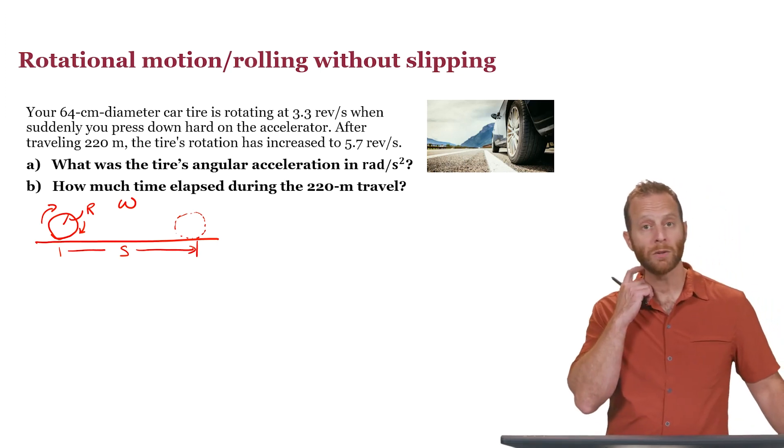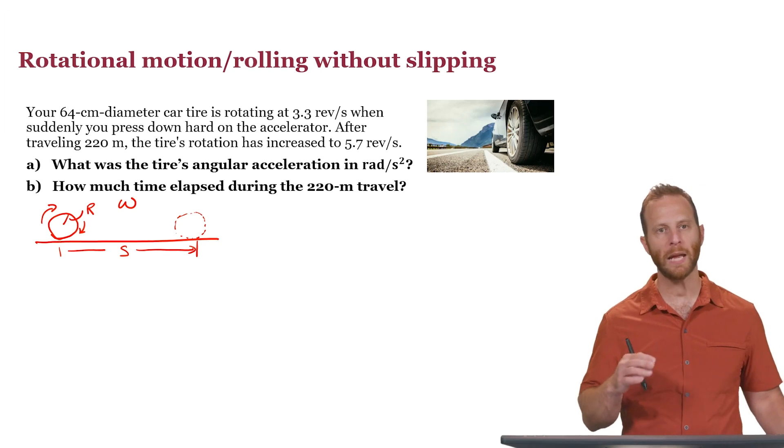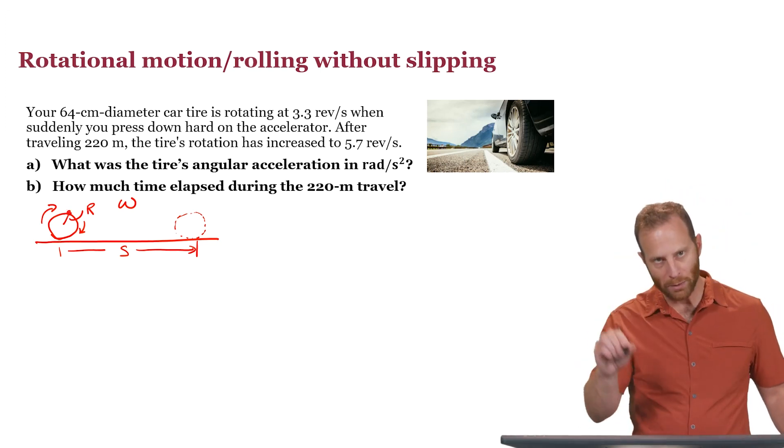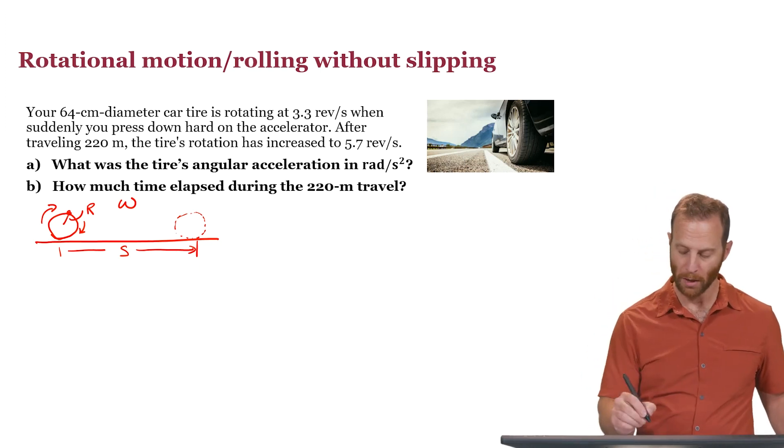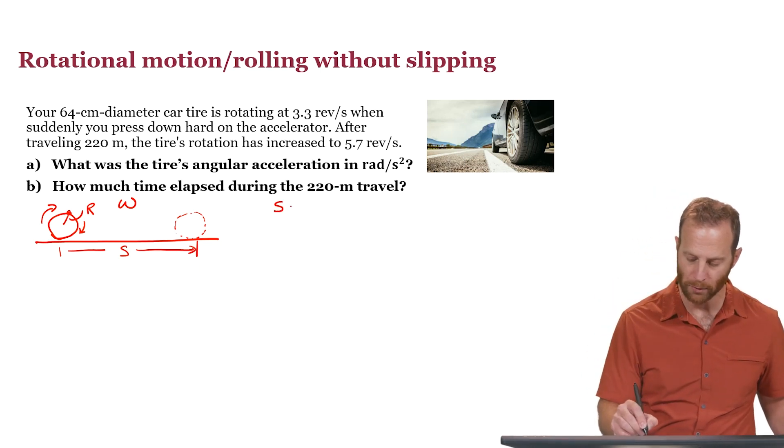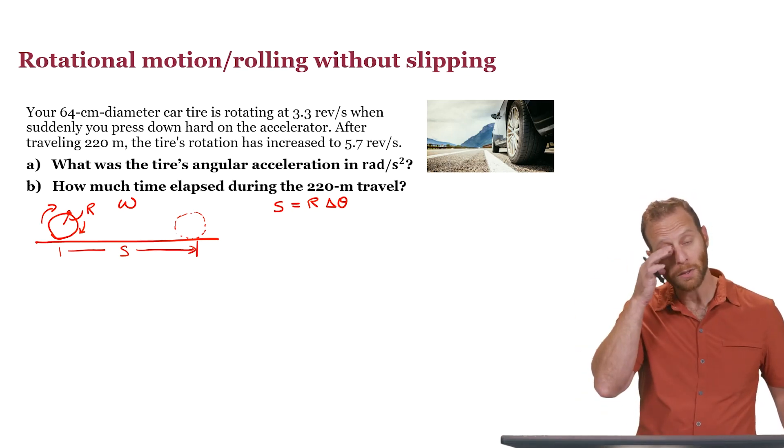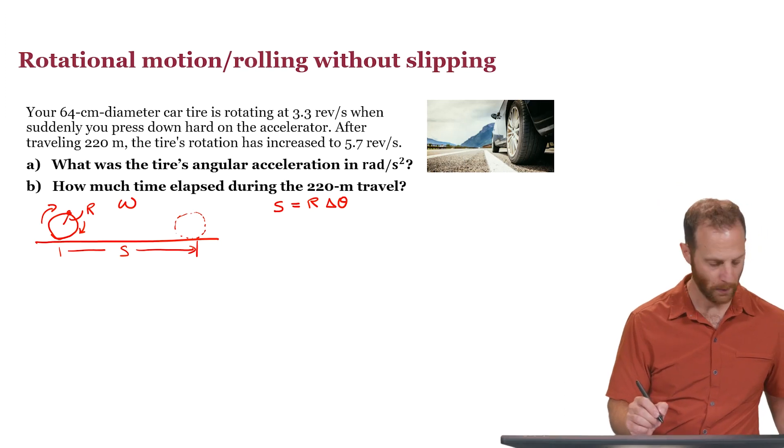How far has the wheel translated? It has moved the same distance that any particular point on the wheel has moved, equivalent to how far it would have moved around its edge. In other words, the distance that it has traveled is equal to r times delta theta, where delta theta is the total number of radians that the circle has rotated.